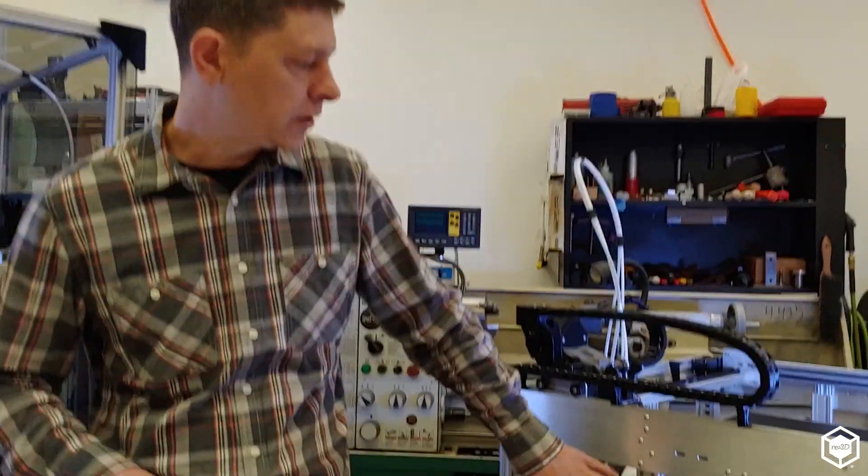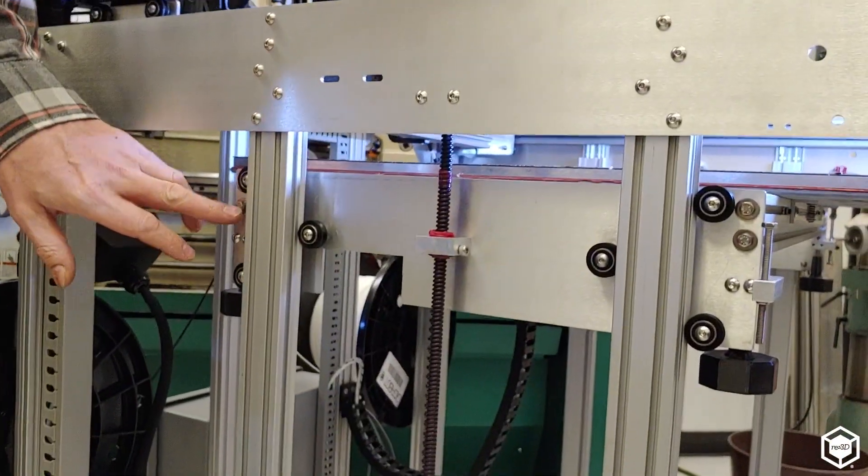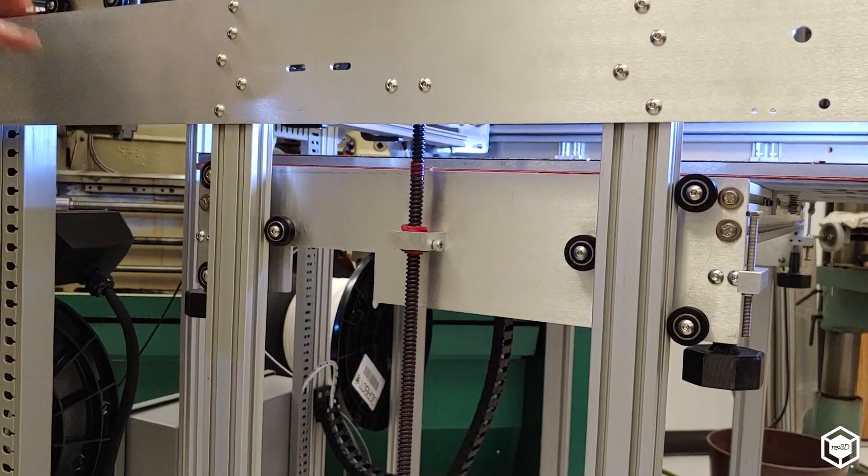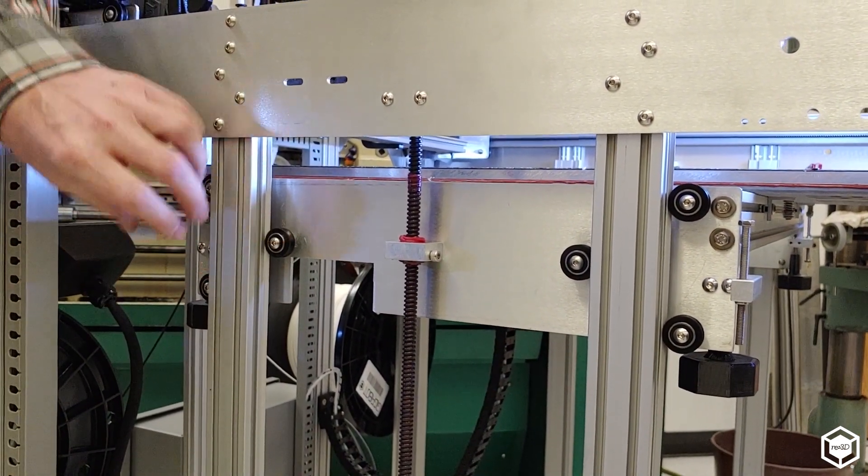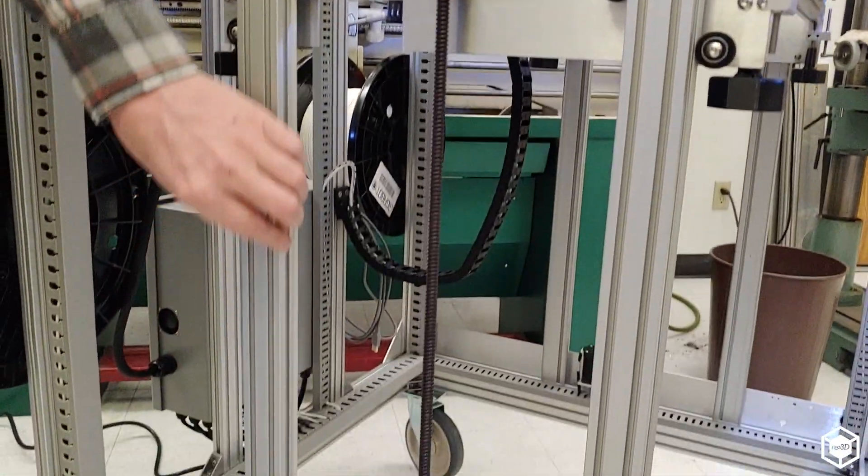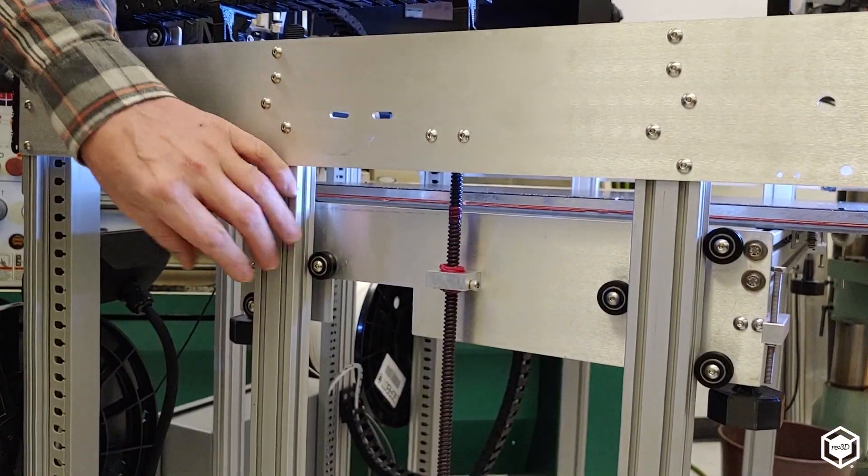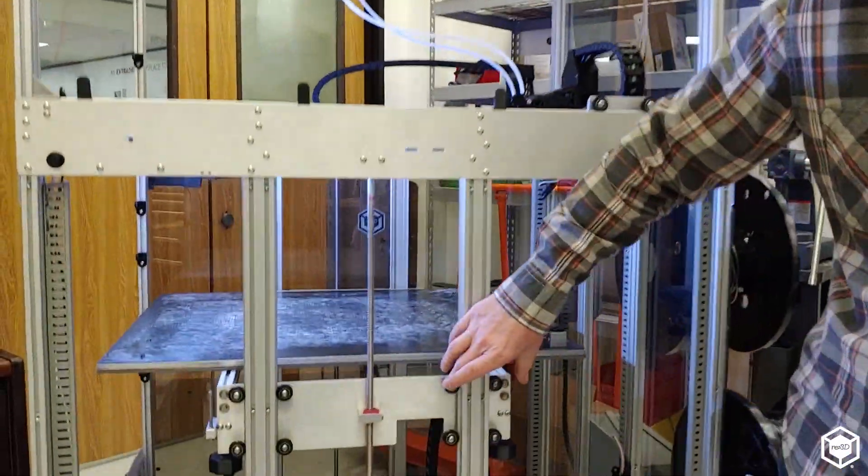So first of all, I want to look at the bedside plate here. This is an important part for keeping the bed steady. And right now we have three V-groove wheels that hold it along the rail as it travels up and down. And what we've done on the new machine I'll show you is we've added some more stability.